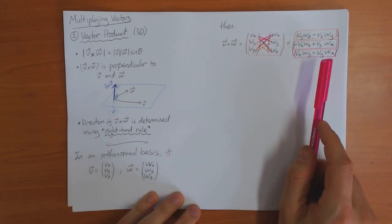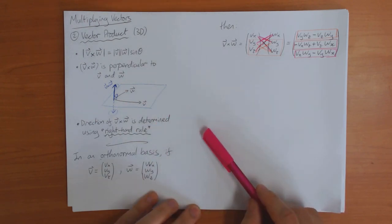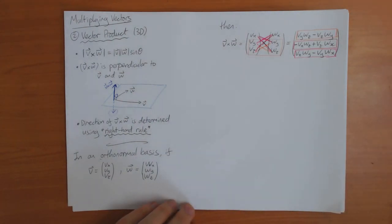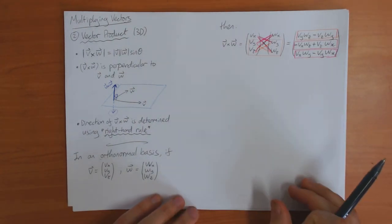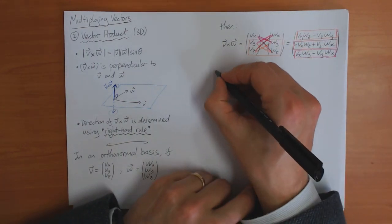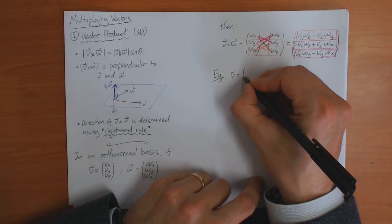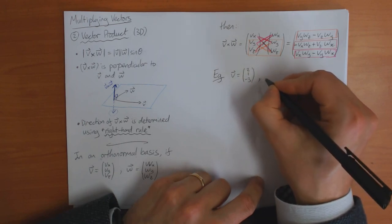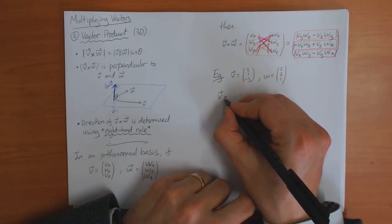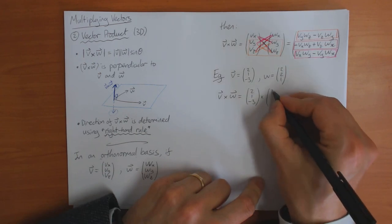It's not easy to prove that this component formula is the same as the geometric definition, but I will do that in a video later on, so for now you can just believe me. That defines the vector product and tells you how to calculate it in an orthonormal basis. As I did with the scalar product, I'll finish with an example, taking the same vectors as in the previous video. So let's compute v cross w.